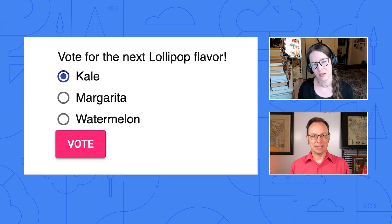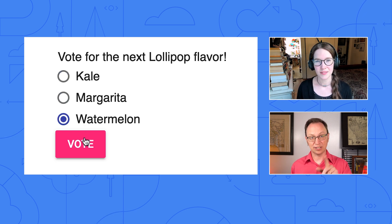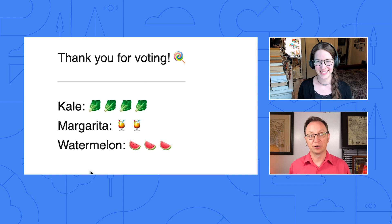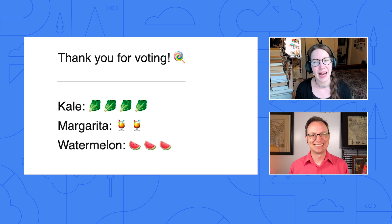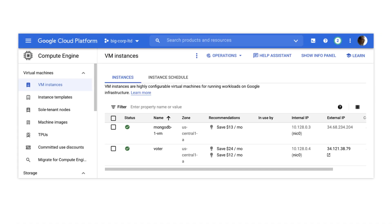I remember hearing about the user feedback web app. We use it to ask our customers questions, right? Yep. Here's a sample question asking customers what lollipop flavor we should release next. Who's voting for kale? Anyway, how does the app work? It's a container that runs on a virtual machine, which is backed by a MongoDB database instance in the cloud.